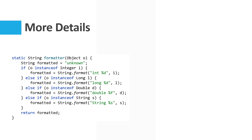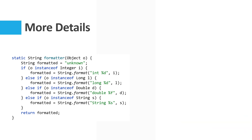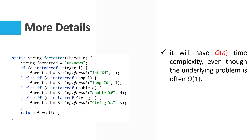The intent is to assign something to 'formatted' in each arm of the if-else chain, but there is nothing that enables the compiler to identify and verify this invariant. If some block — perhaps one executed rarely — does not assign to 'formatted', we have a bug. In addition, the code is not optimizable, so absent compiler heroics, it will have O(n) time complexity, even though the underlying problem is often O(1).